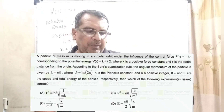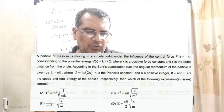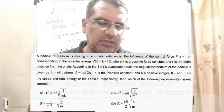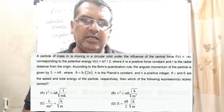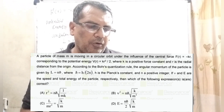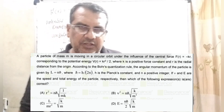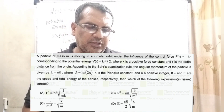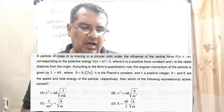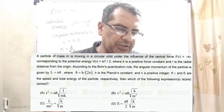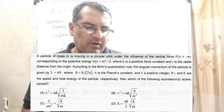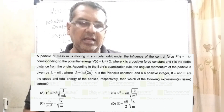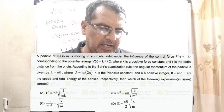Now here is the question. A particle of mass m is moving in a circular orbit under the influence of the central force. F as a function of r is equal to minus kr, corresponding to the potential energy V as a function of r is equal to kr² by 2. According to Bohr's quantization rule, the angular momentum of the particle is given by L = n × h-bar.